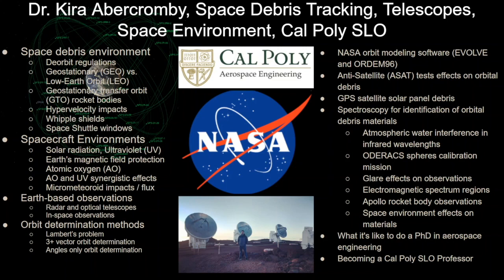This is the sixth episode of the Space Engineering Podcast with Dr. Kira Abercrombie as a guest, who is a professor in the Aerospace Engineering Department at Cal Poly San Luis Obispo. She previously worked at NASA doing ongoing work from her PhD, where her thesis was titled 'Using Reflectance Spectroscopy to Determine Material Type of Orbital Debris.' In this episode, we go heavy into the space debris environment: de-orbit regulations, the difference between space debris in GEO versus LEO orbits, geostationary transfer rocket bodies, hypervelocity impacts, Whipple shields, and space shuttle windows.